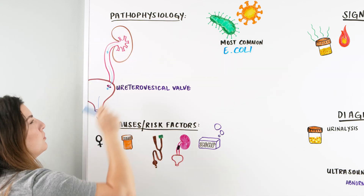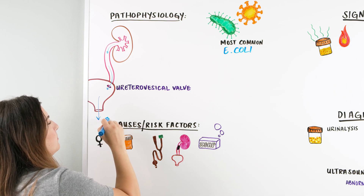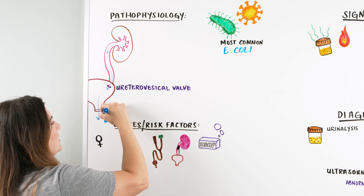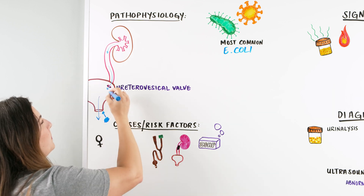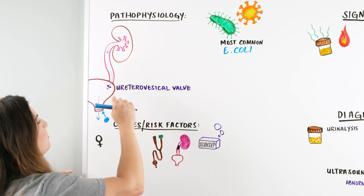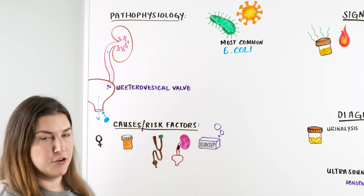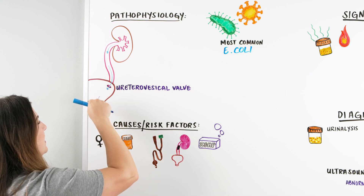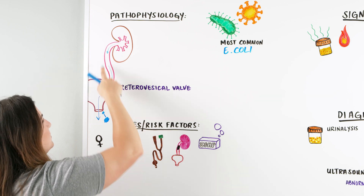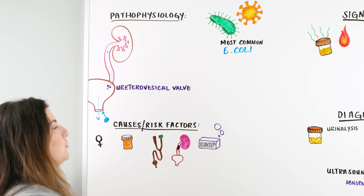Urine flows out. E. coli essentially comes from nearby, particularly the rectum, and starts to ascend up into the bladder. Once it gets into the bladder — maybe we have distension of the bladder, we're holding our urine too long, or there's a blockage from the prostate — the bladder starts to distend and overflow, causing pressure on the valve. Then we get backflow up into the kidney, which can cause all types of issues within our urinary tract.